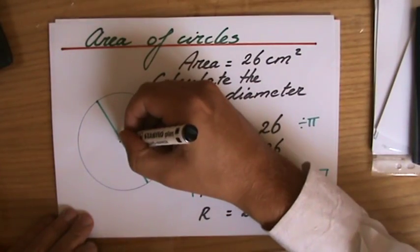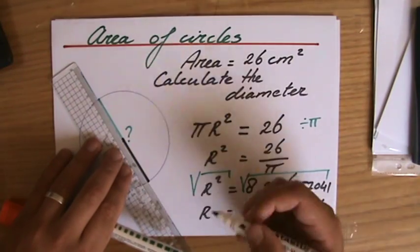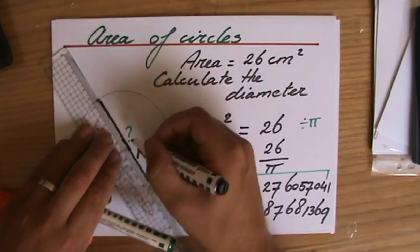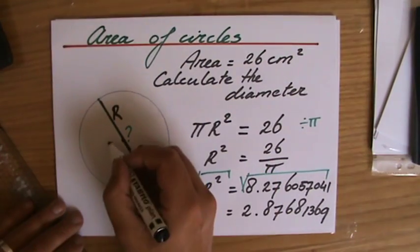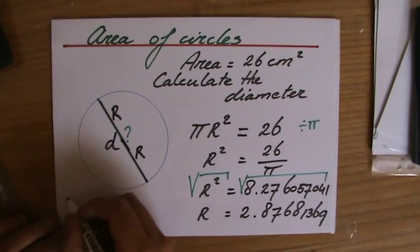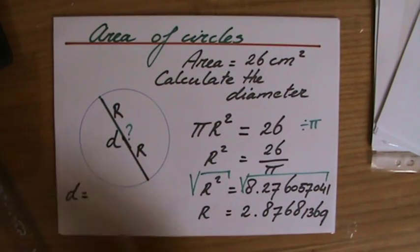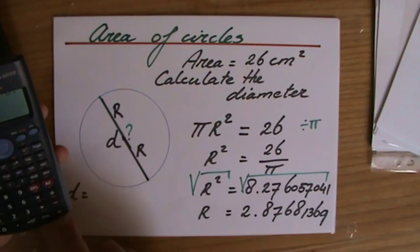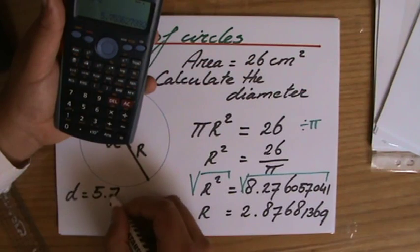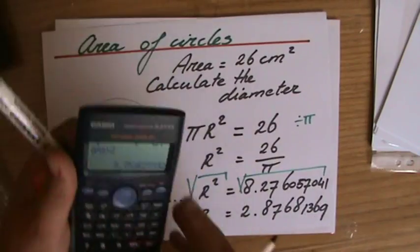You have to find the diameter which is two times the radius. Remember that the radius is that length from the midpoint to the circumference. The diameter is the whole line, so 2r is the diameter. So I have to multiply this by two. So the diameter, multiply the radius by two, which is going to give me 5.753627 and a few more decimals.